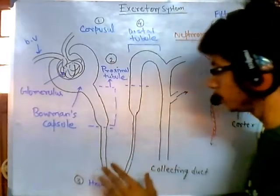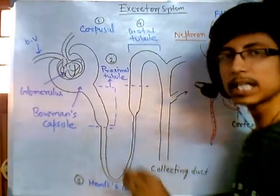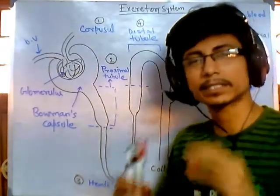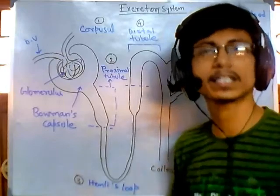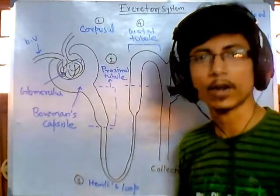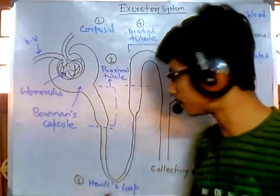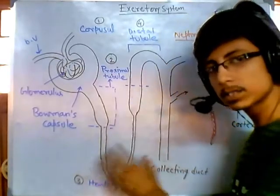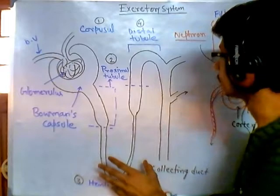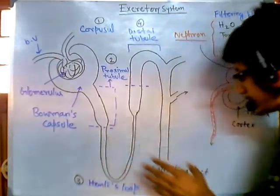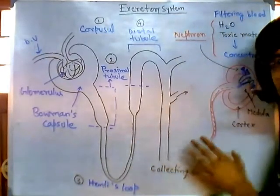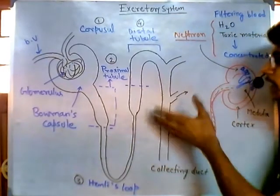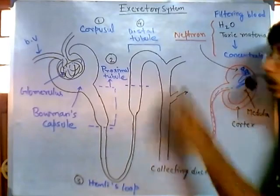Henle's loop is doing the task of concentrating the urine, and that is the most fascinating stuff of all — we'll be learning it. So this is concentrating the urine. And finally, collecting duct is there, and the function of collecting duct is to collect it.